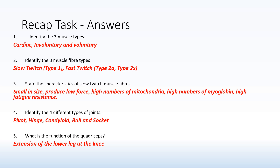Question three: characteristics of slow twitch muscle fibres. They are small in size and therefore can only produce low force. They have high numbers of mitochondria, which is used for energy, and high numbers of myoglobin — we've related to this in previous lessons as the bouncers, as they're the ones that allow oxygen into the muscle. They also have high fatigue resistance, so therefore they are used by long distance runners to help maximise their performance.